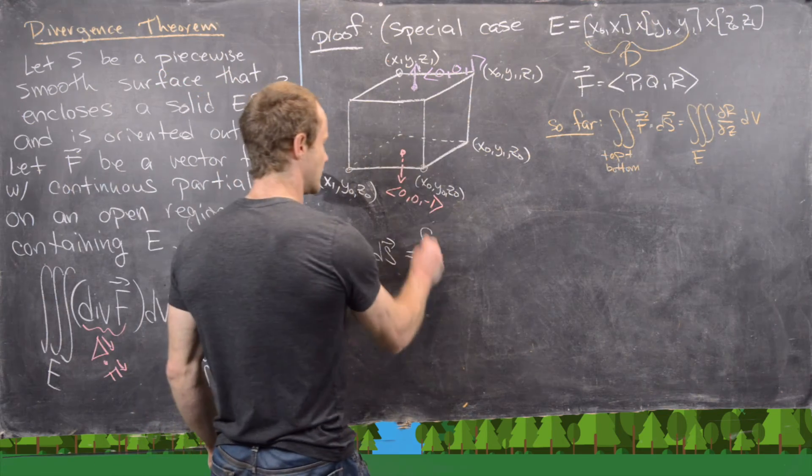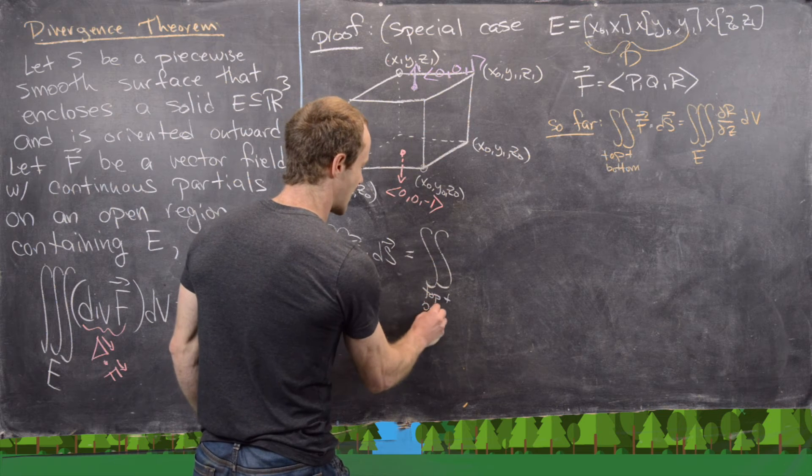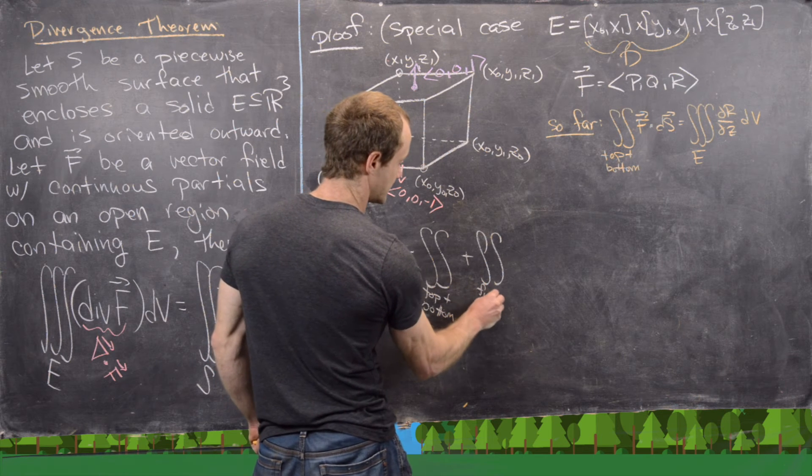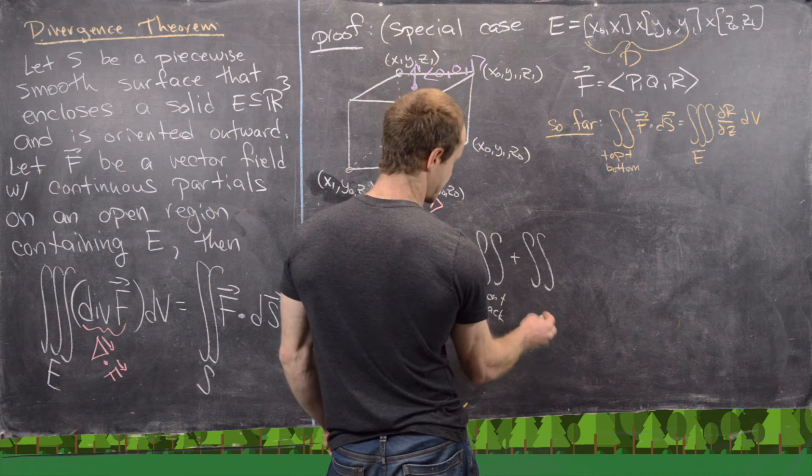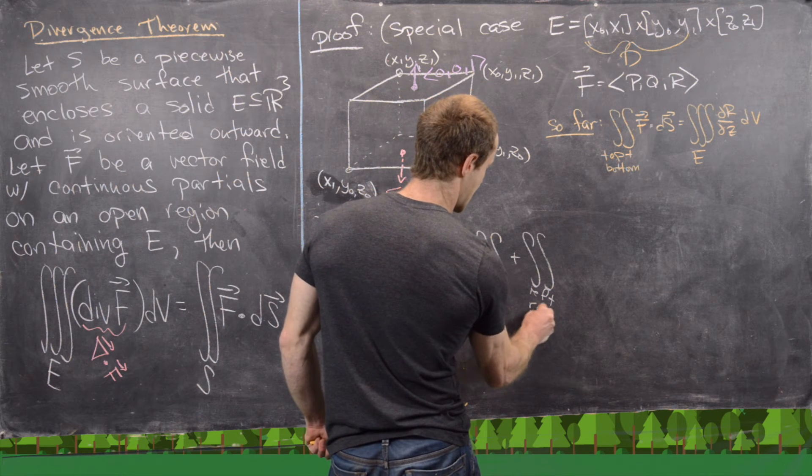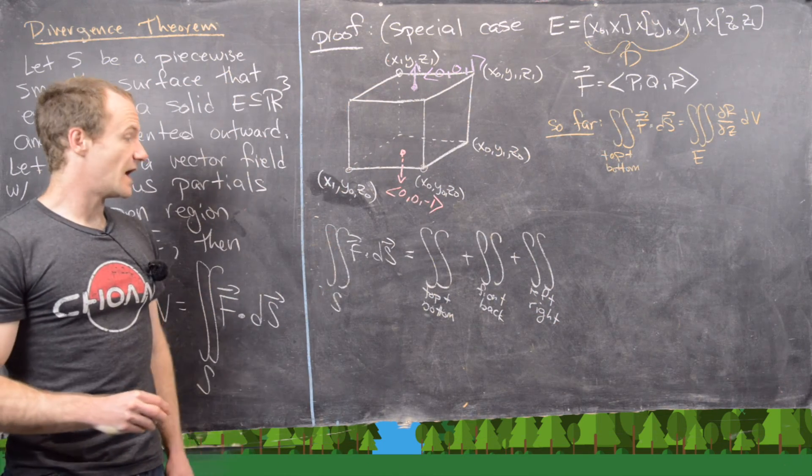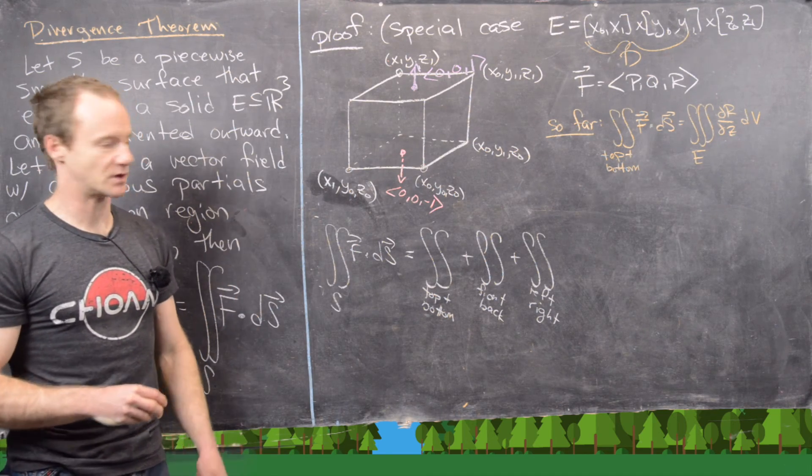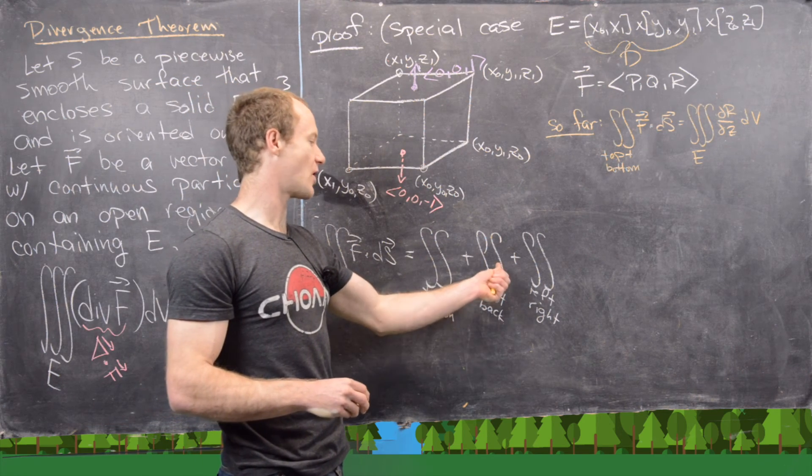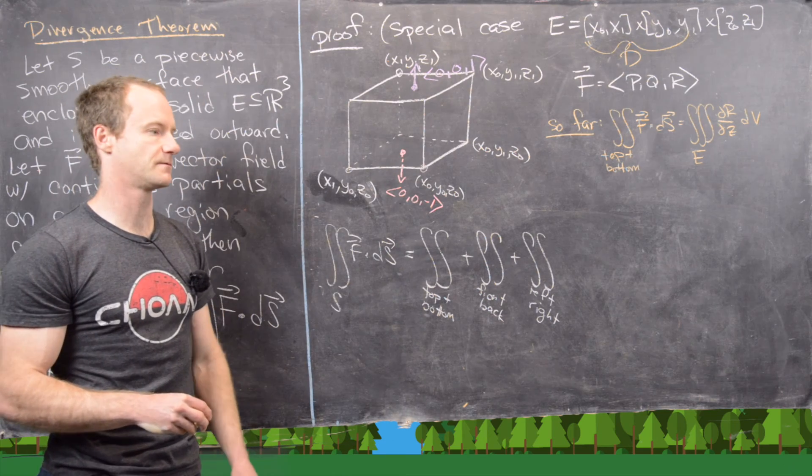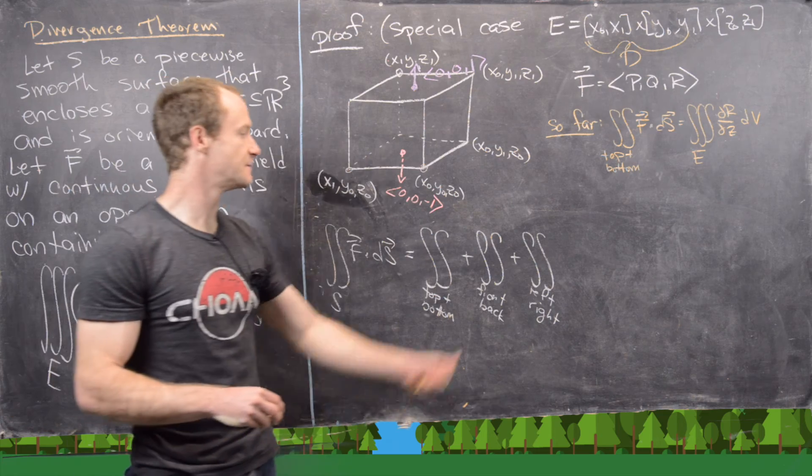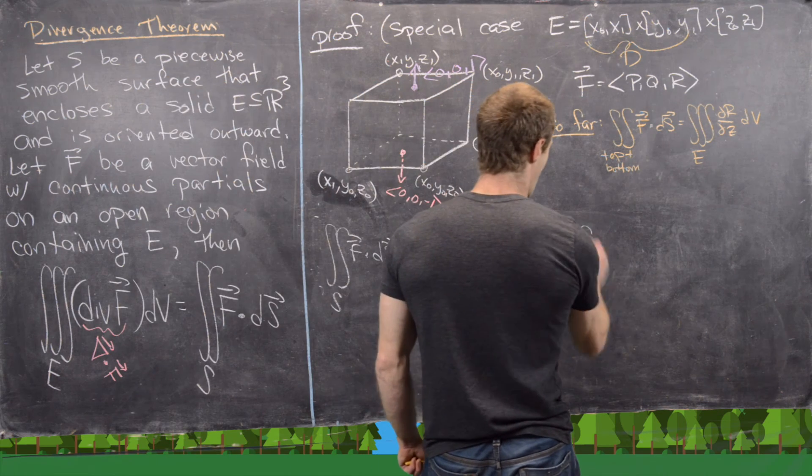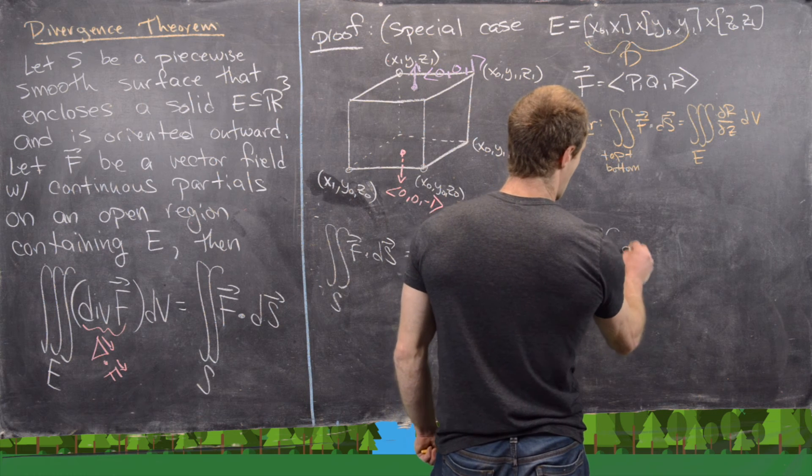Notice that's going to be the surface integral over the top plus bottom plus the surface integral over the front and the back plus the surface integral over the left and the right. But for each of these you get pretty much the same thing, and it's exactly the same calculation just with some letters switched out. So for this one you get ∂r/∂z. For this one you'll get ∂q/∂y, and for that one you'll get ∂p/∂x. So for this one we got ∂r/∂z. For one of these you'll get ∂q/∂y, and for the other one you'll get ∂p/∂x.